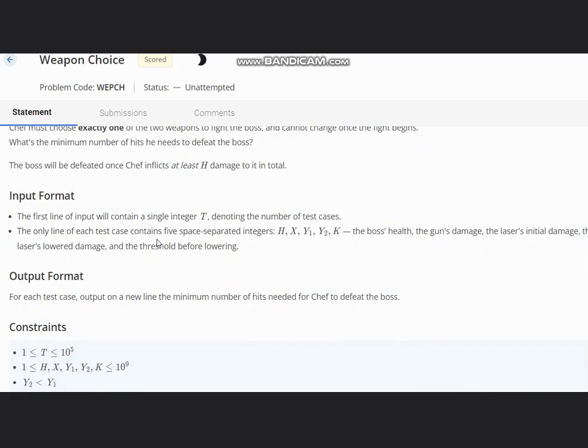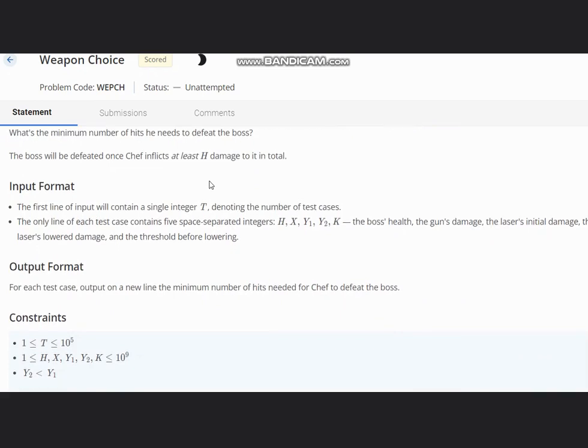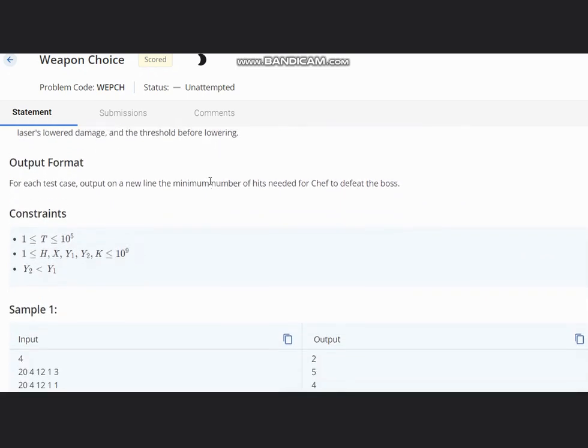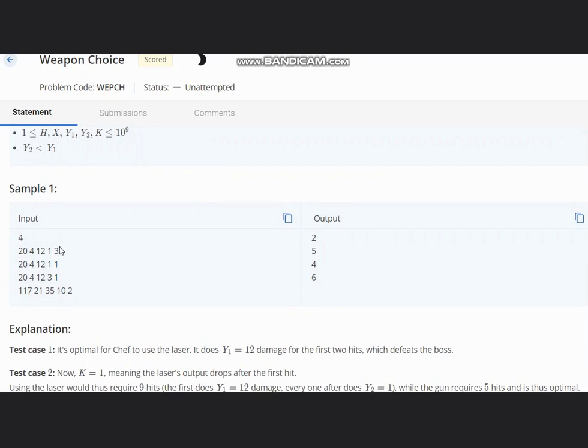So our input is 24 12 1 3. In case of 24 12 1 3, the input format is first we can write H, then gun which is X, then Y1, Y2, and at last K.